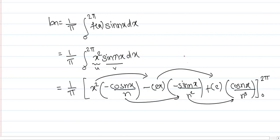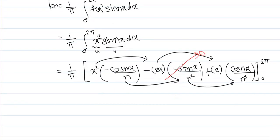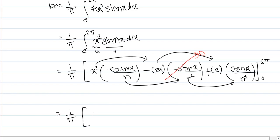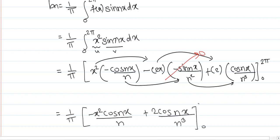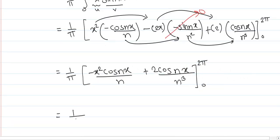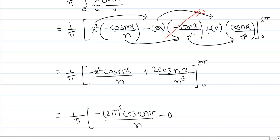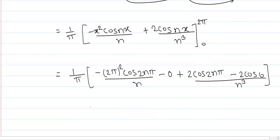For the upper and lower limits, the sin nx terms become 0. The remaining terms are (1/π) [−x² cos nx/n + 2 cos nx/n³] from 0 to 2π. Substituting limits: (1/π) [−(2π)² cos(2nπ)/n + 2 cos(2nπ)/n³ − 2 cos 0/n³]. This gives (1/π) × (−4π²/n), so bₙ = −4π/n.